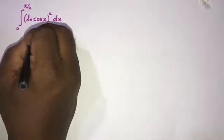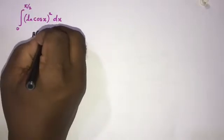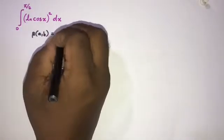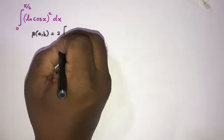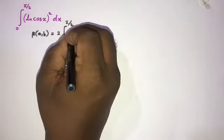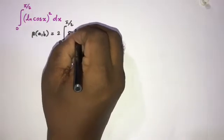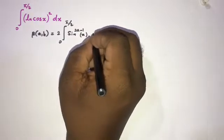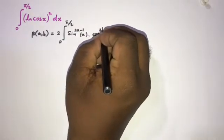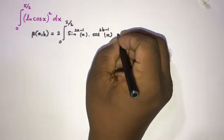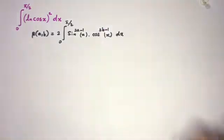We know about the beta function: B(a, b) is equal to 2 times the integral from 0 to π/2 of sin^(2a−1)(x) · cos^(2b−1)(x) dx.